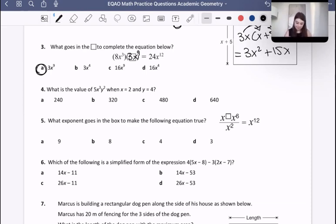Okay, what is the value of 5x cubed y squared when x is 2 and y is 4? Well, let's find that out. 5 times 2 cubed times y, which is 4 squared, is equal to 5 times 2 cubed. What's 2 cubed? That's going to be 8 times 4 squared. That's going to be 16. Then let's plug that into our calculator. What's 5 times 8 times 16? That is going to be 640. So therefore, our answer is D, which is 640. Very good.